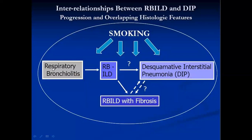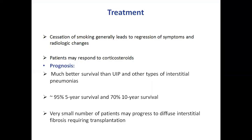As discussed earlier, there is interrelationship and overlap between respiratory bronchiolitis and DIP. Some authors emphasize that DIP is a severe form of RBILD — if the patient continues smoking, the RBILD will convert into DIP. However, many authors also indicate that it is not a disease itself, but a process which can be seen in many other diseases as well.